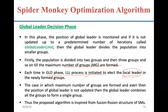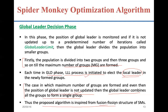If the maximum number of groups are already formed and even then the global leader position is not updated, the global leader creates a fusion — combining all the groups back together. So the global leader performs fission (division) when not updated before reaching the maximum groups, and fusion (combination) when the maximum groups are formed but still no update occurs. The rights of both fission and fusion lie only with the global leader, which is why this algorithm is also known as a fission-fusion social structure based optimization algorithm.